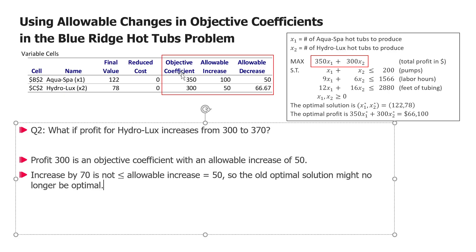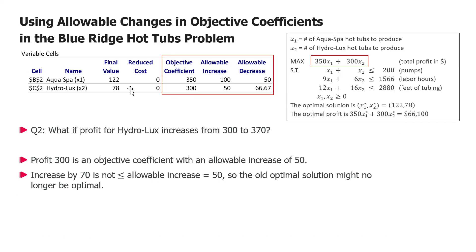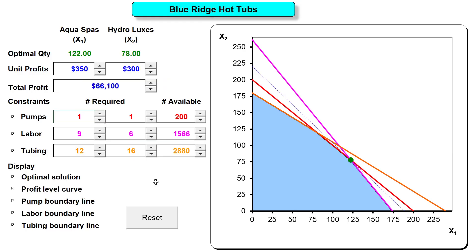To summarize, the allowable increase tells us — in this case for HydroLuxes — in what range, if we change just one coefficient, the optimal solution will remain the same as it was. If you go outside of this allowable increase, we know that the optimal solution might change, the old optimal solution might no longer be optimal, and therefore we need to resolve the problem to find out what the new optimal solution is.